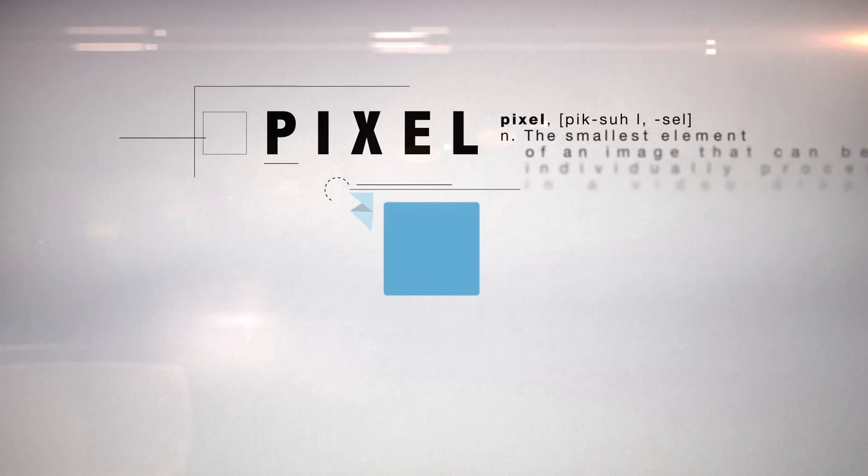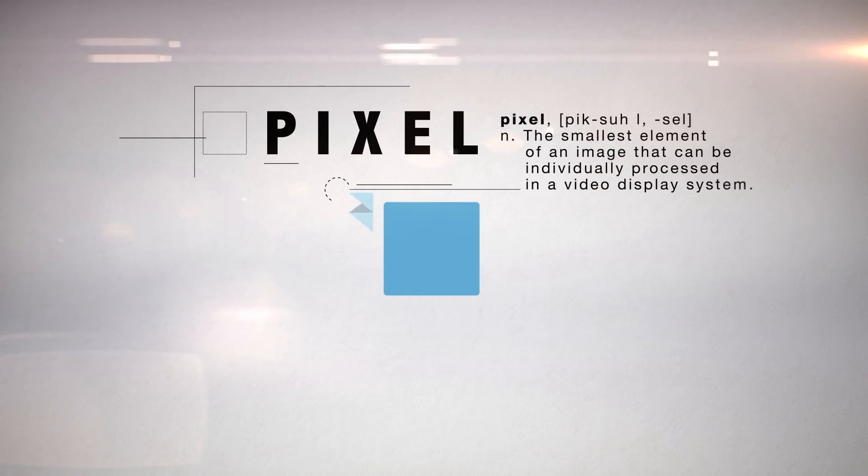Every 2D image your eyes see is made up of tiny pixels, different colors working together to create new colors, textures, and patterns.